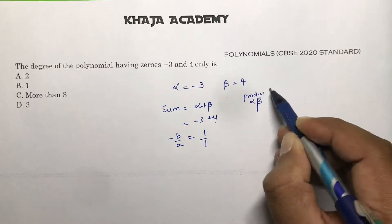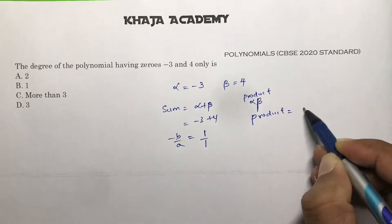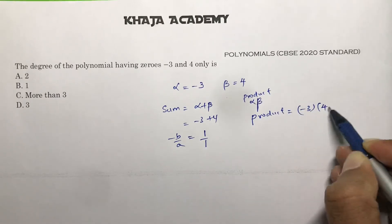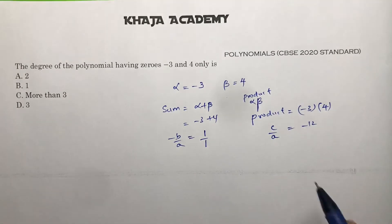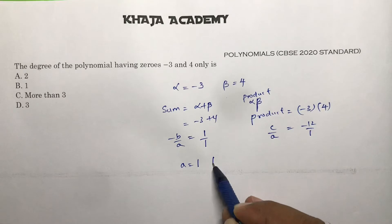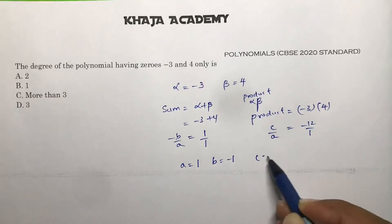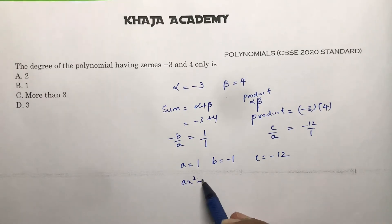So product equals alpha is minus 3, beta is 4, so minus 12, which is nothing but c by a. So on comparing, a value is 1, b is minus 1, c is minus 12. So standard polynomial is ax square plus bx plus c.